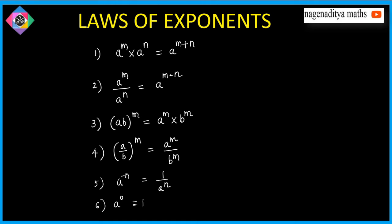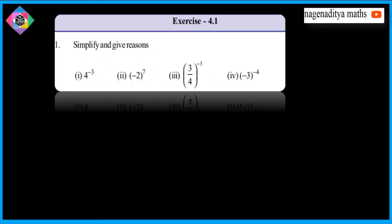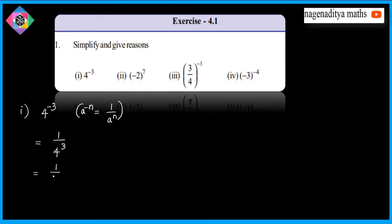Based on these laws of exponents we will do the problems. First problem: evaluate 1/a^n. This is equal to 1/4³. Now 4³ = 64, so the answer is 1/64.